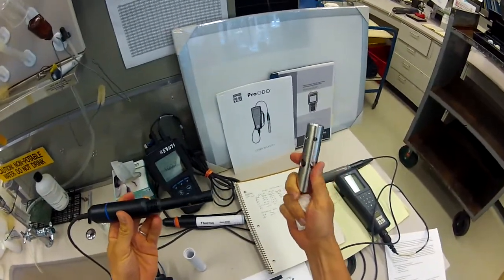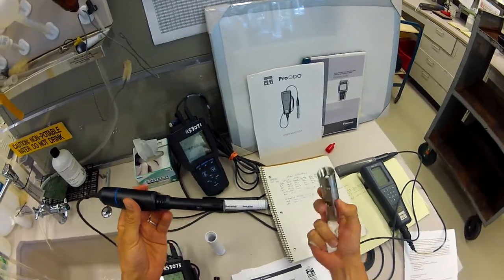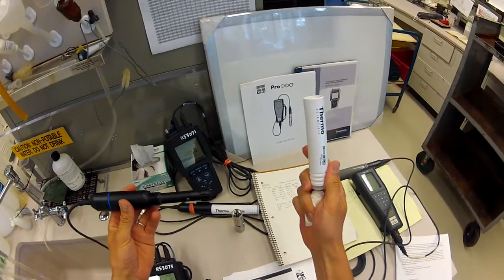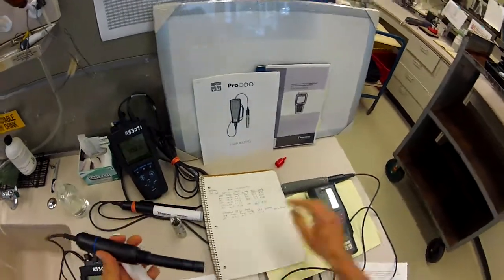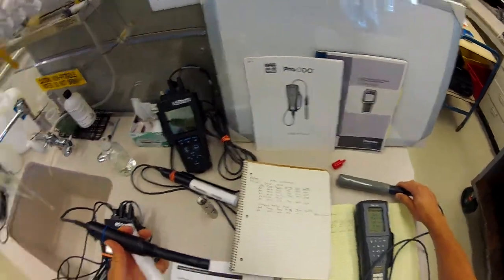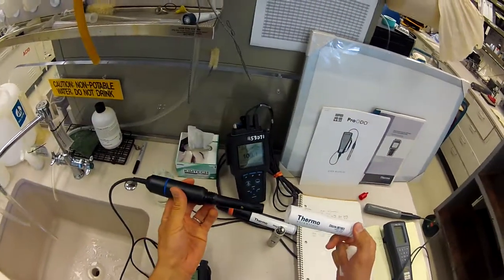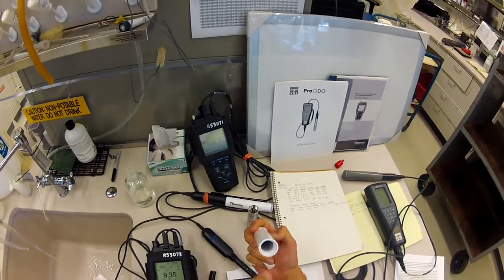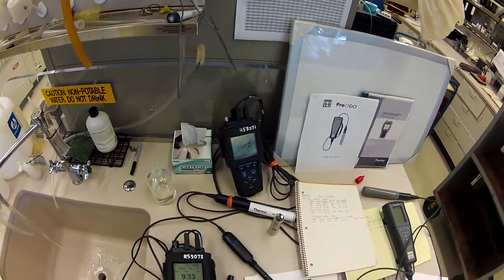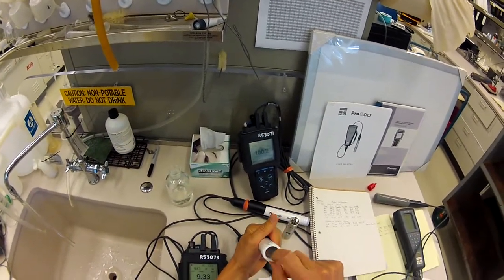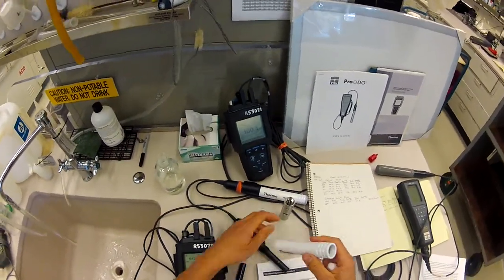The probe will usually have some type of guard to protect it during field use and then the calibration chamber of some type. Here's the YSI calibration chamber, this gray end on that probe. The Thermo one looks like this, and the calibration chamber will usually maybe have some type of sponge in the end of it that you'll either be able to pound out or it'll have access from the end like this.